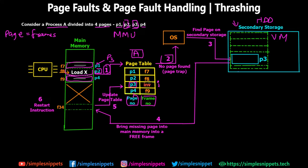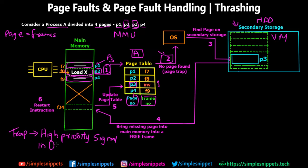A trap is a high priority signal in operating systems which the OS cannot preempt. Whenever a trap signal is generated, the operating system must compulsorily look at and resolve that signal. A trap is a very high priority signal which the OS cannot ignore. So a trap is generated and sent to the OS with all the information that P3 is not in the page table of process A.